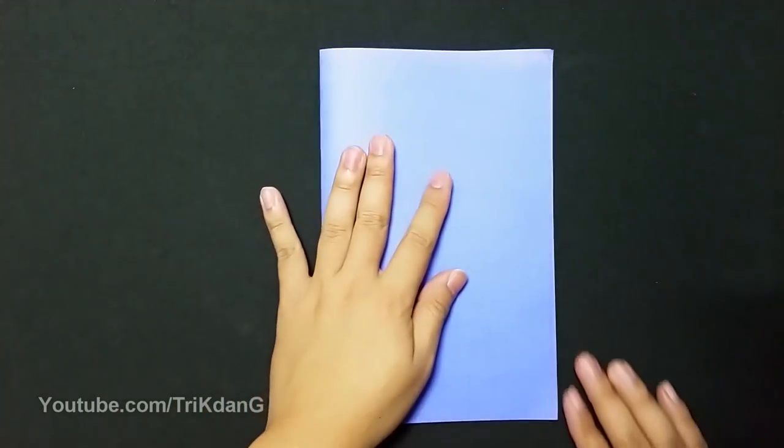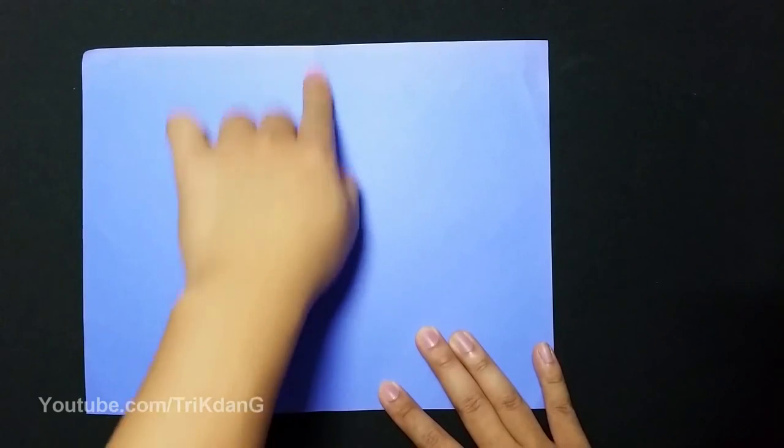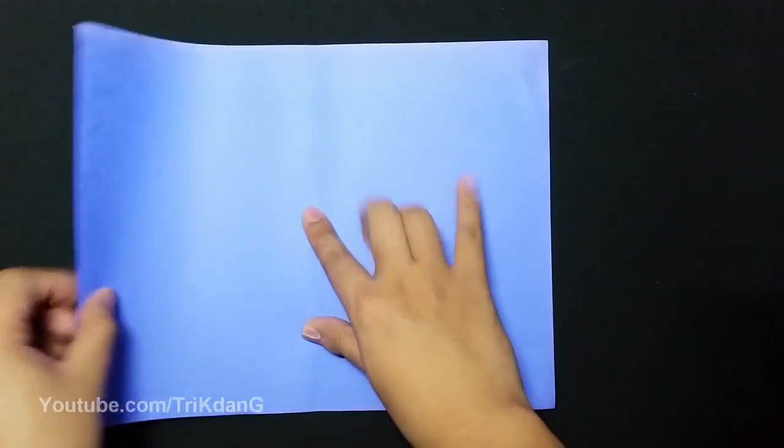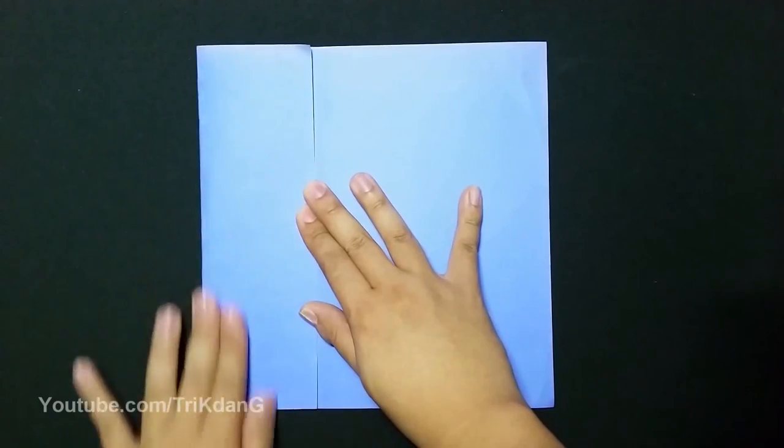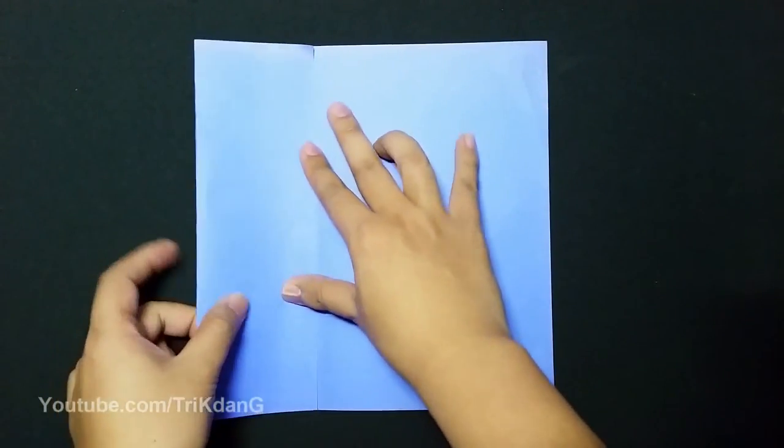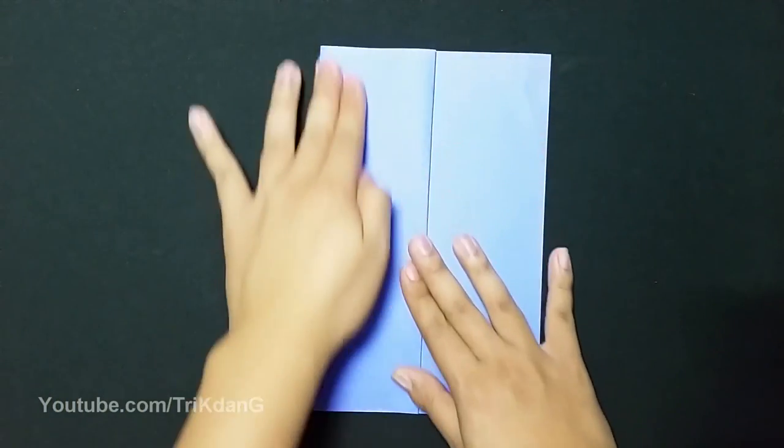First step, fold the paper in half. Now fold it to this center crease. Unfold the paper. Now start from this edge, fold it to this center crease. And then fold it down one more time. Very simple.